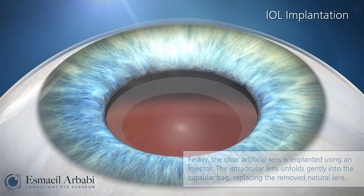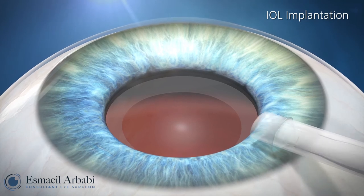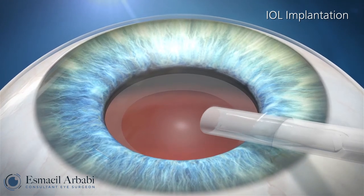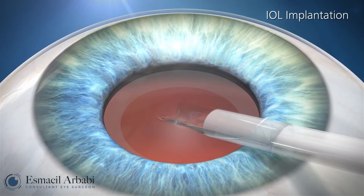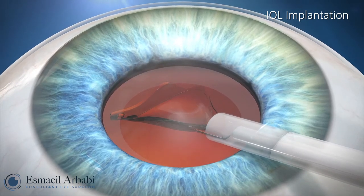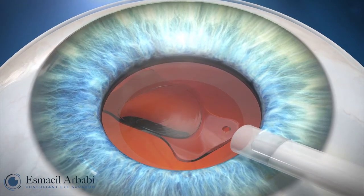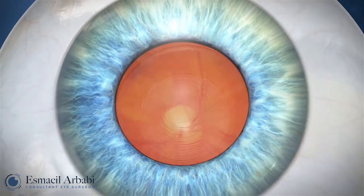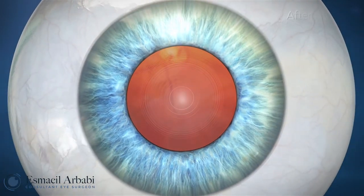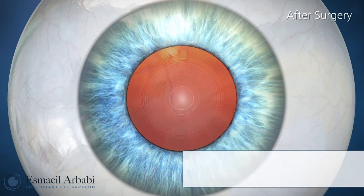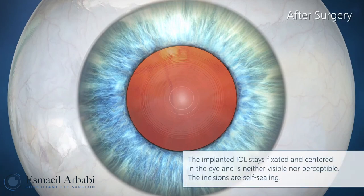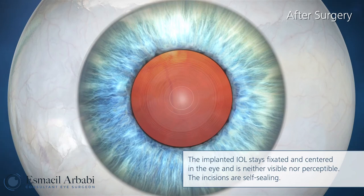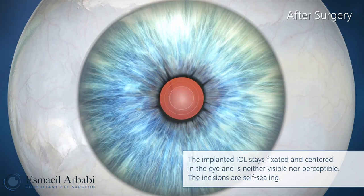The intraocular lens unfolds gently into the capsular bag, replacing the removed natural lens. The implanted intraocular lens stays fixated and centered in the eye and is neither visible nor perceptible. The incisions are self-sealing.